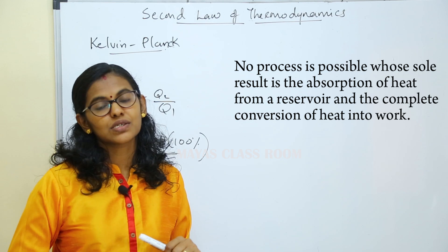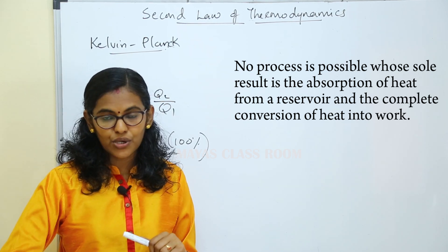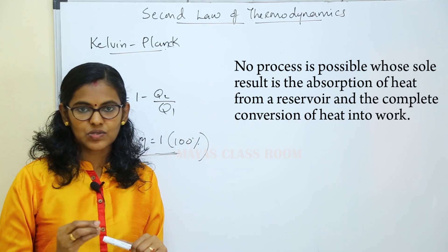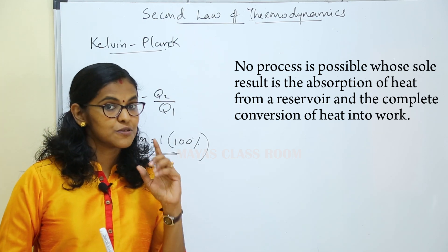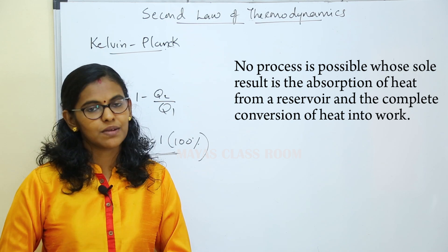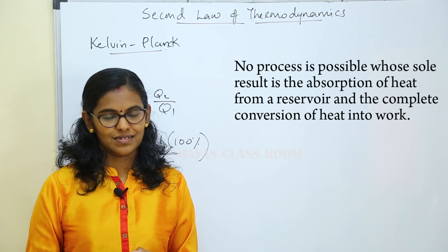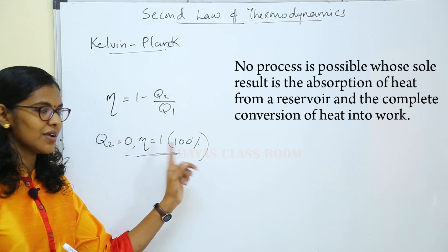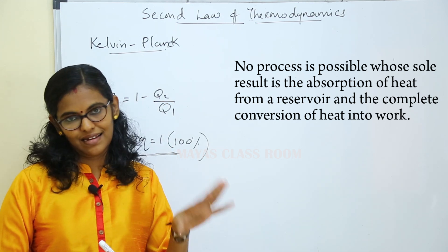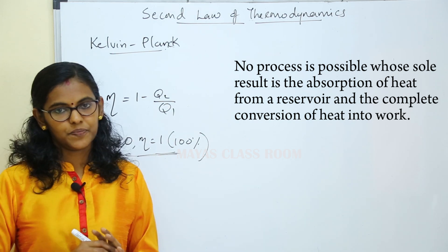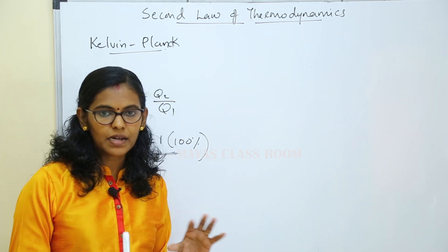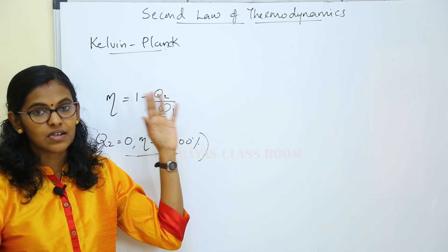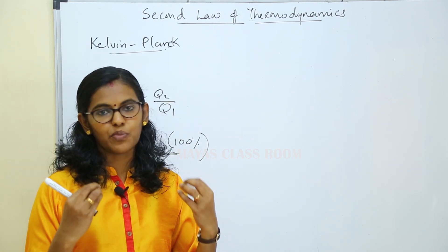No process is possible whose sole result is the absorption of heat from the reservoir and the complete conversion of heat into work. That is the Kelvin-Planck statement. The explanation is based on the heat engine with Q2 and 100% efficiency. A heat engine is possible because there is a temperature difference.